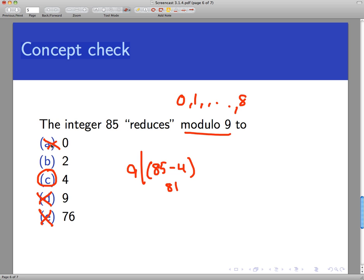But that cannot be said for these other two guys here. So again, 85 reduces to a unique non-negative integer that's between 0 and 9 minus 1.